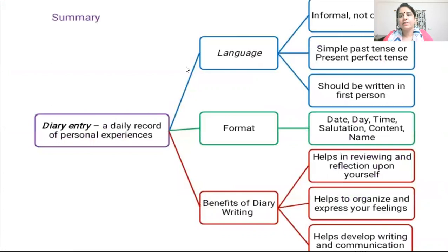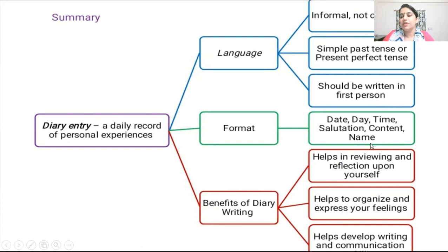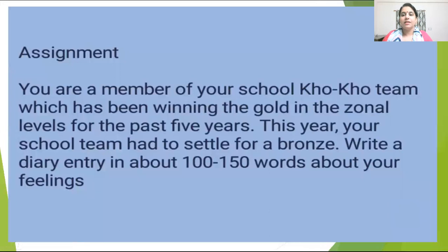These are the three aspects of Diary Writing: language, format, and benefits. Language should be informal, written in simple past tense or present continuous tense, and in first person. The format includes: date, day, salutation, content, and name — everything written in a proper way to score good marks. As we have discussed, the benefits of diary writing include helping you to organize and express your feelings.